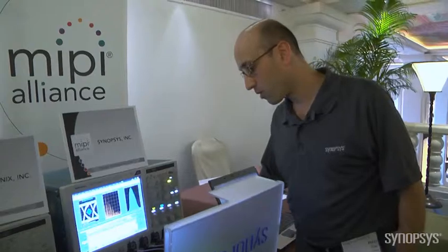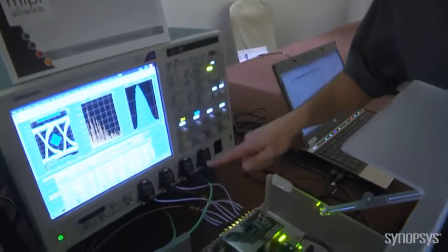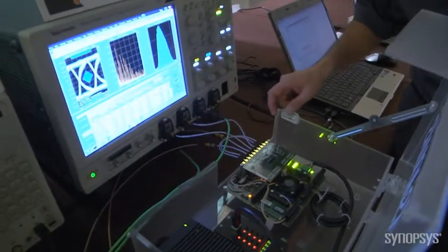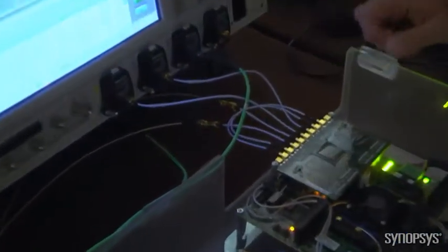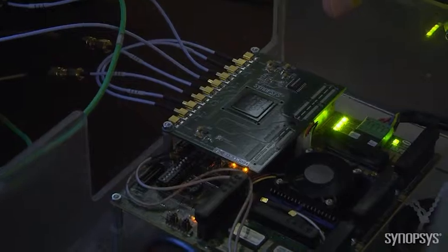The M5 test chip is available on this daughter card, which has one transmission lane connected to the Tektronix scope. There's one receive lane connecting to the Tektronix test equipment, and another lane connecting in loopback. Chuan Chin, can you show us how we can capture the eye on the transmission side?